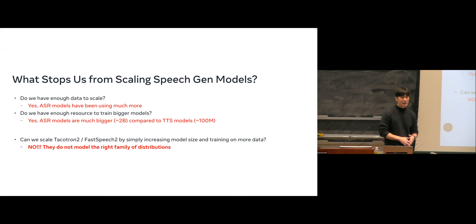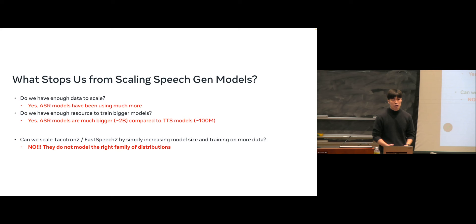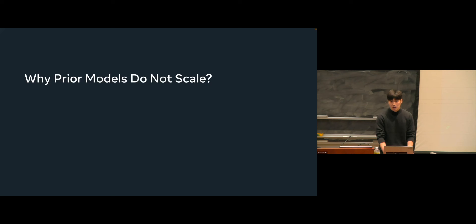The reason is they do not model the right family of distributions. It's about underfitting, but the underfitting is not about the number of model parameters — it's about the underlying statistical assumption you make about the distribution you are modeling.